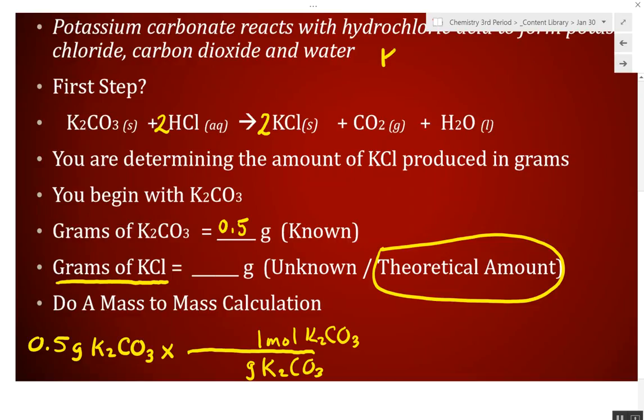Next, one mole of K2CO3 weighs what? You got potassium, two of them. You got carbon, one of them. And you got oxygen, three of them. Carbon weighs 12. Oxygen weighs 16. What does potassium weigh? 39. We'll make it simple. So, we got 78. Add that up. We got 18, 7, 8, 9, and 4 is 13. So, one mole of potassium carbonate weighs 138 grams.